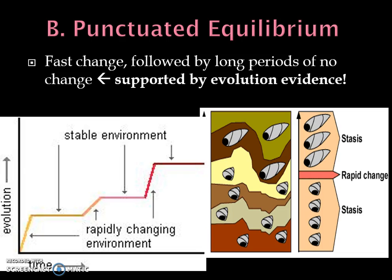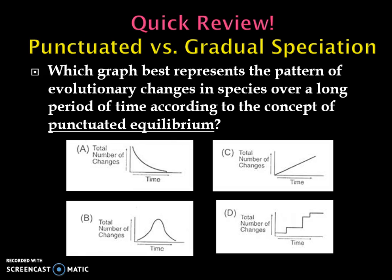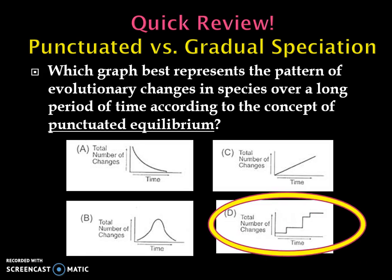Let's do a practice problem. Which graph best represents the pattern of evolutionary change in a species over time, according to the concept of punctuated equilibrium? Remember, punctuated equilibrium involves fast, quick change. I often say it's the graph that looks most like a staircase. The answer was D. If drawing a picture of punctuated equilibrium would be helpful to remember it, I'd recommend adding that diagram to your notes.